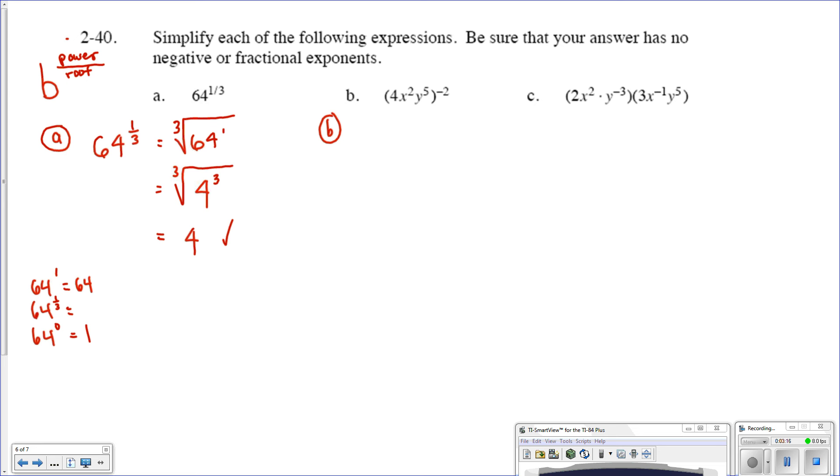So what we'll have here is: 4 to the first power times negative 2 would be the same thing as saying 4 to the negative second power times. Negative 2 times 2 is going to give us x to the negative fourth power. And then negative 2 times 5 is going to give us y to the negative tenth power.